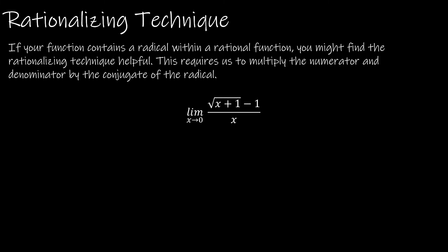Our next technique also deals with rational functions containing a radical. If I tried to direct substitute, I would get 0 over 0 — an indeterminate form — so I need to work harder. What I'll do is multiply by the conjugate of the expression that includes the radical — same terms, change the sign — in both the numerator and denominator, which is like multiplying by 1, so no mathematical laws are broken.